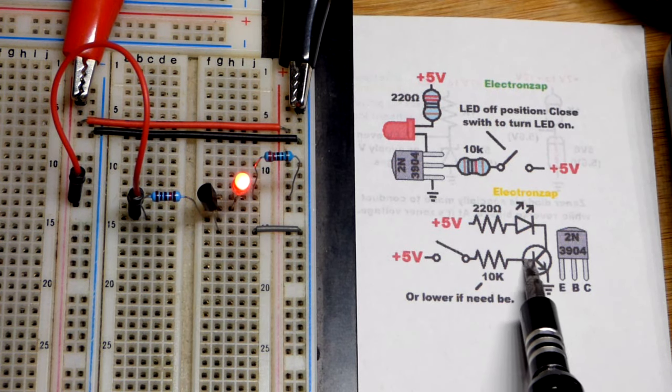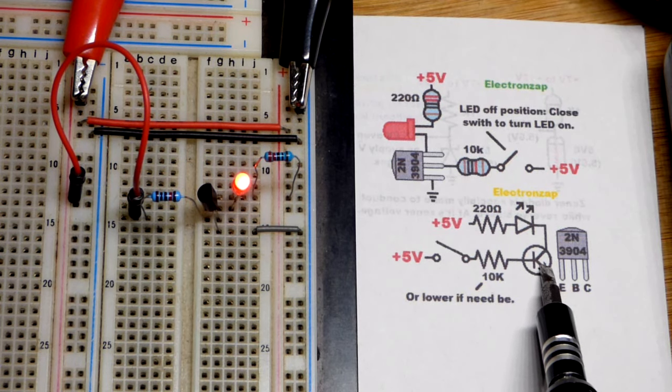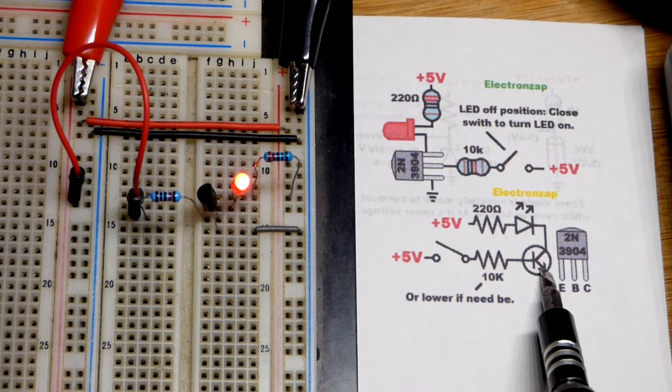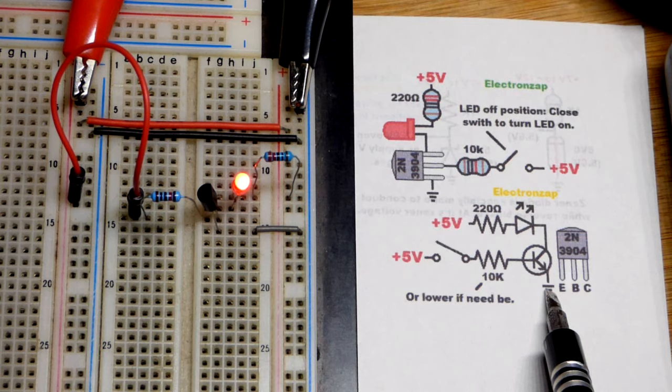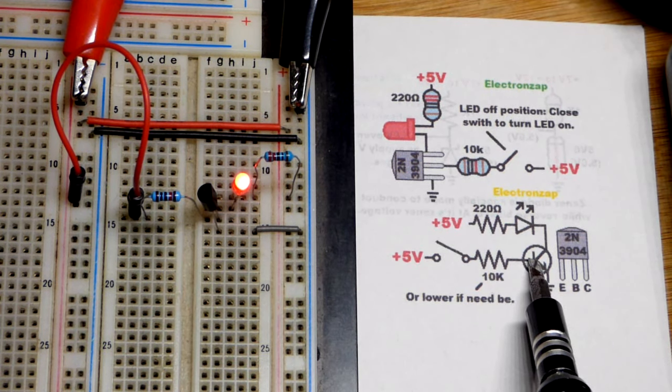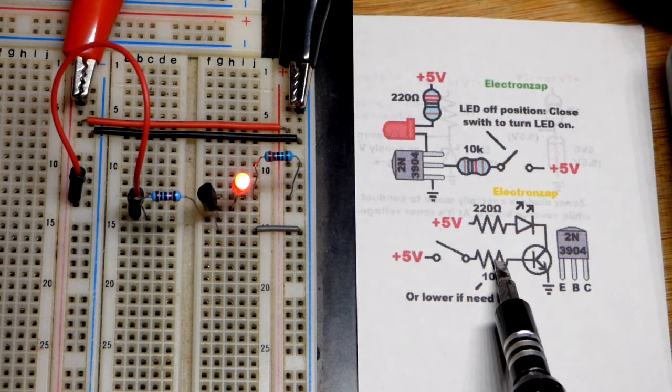So with the NPN bipolar junction transistor this is a diode basically right here. It's NPN. So we have a PN junction right there. This side has to get more positive than that side by about 0.7 volts or so. Just kind of like how the LED has a forward voltage. Same basic principle.